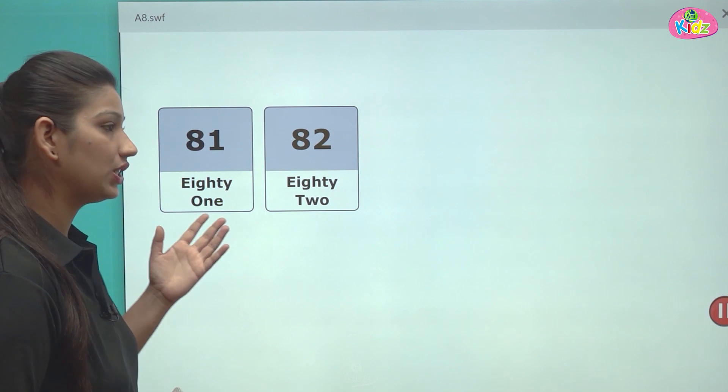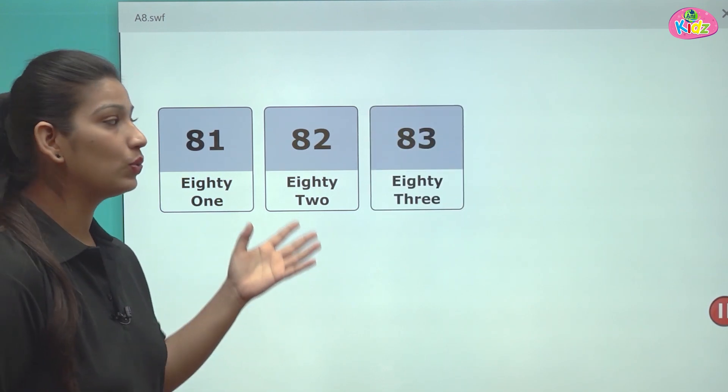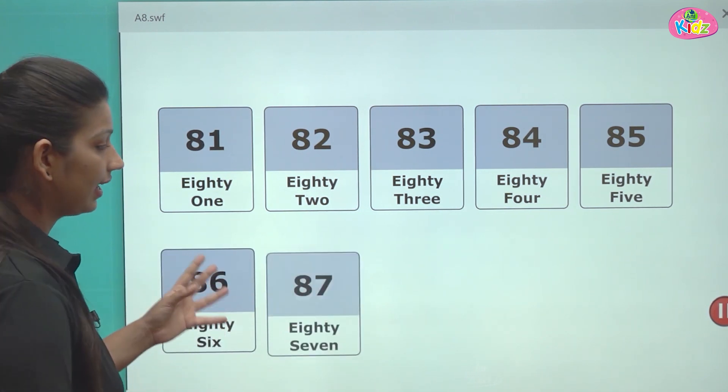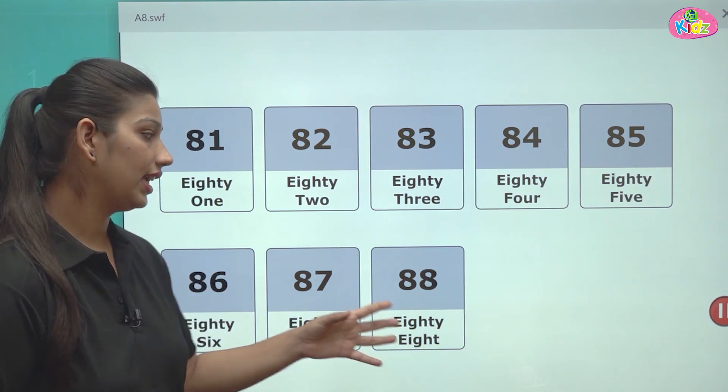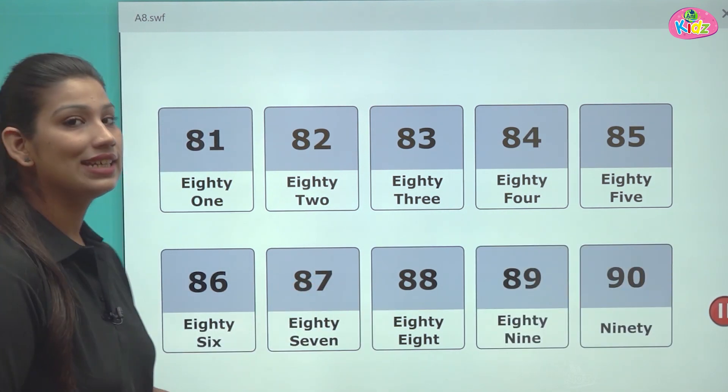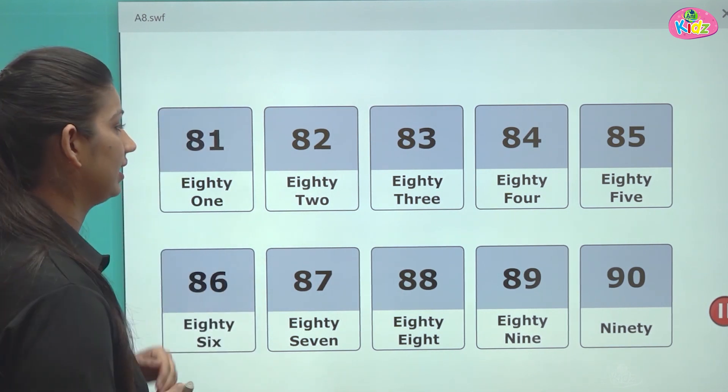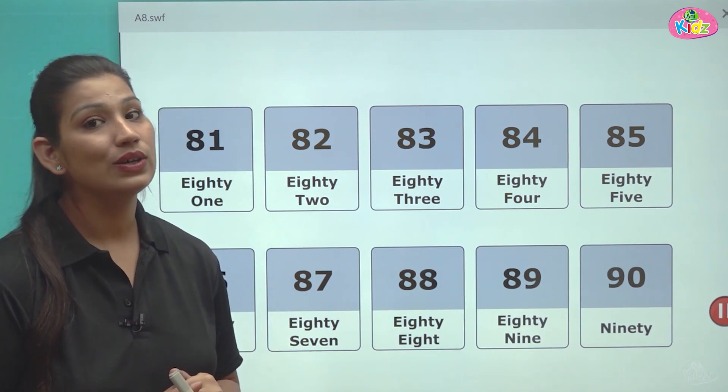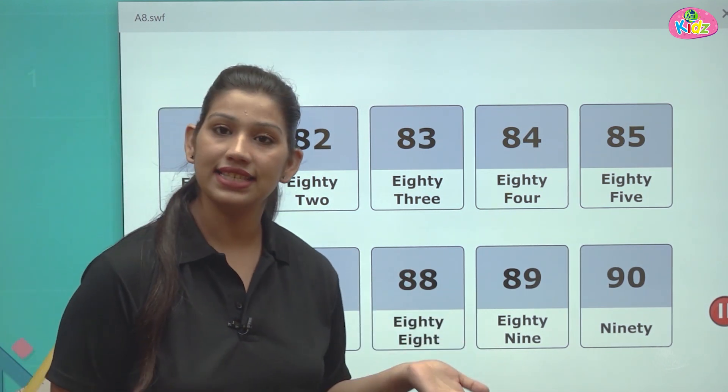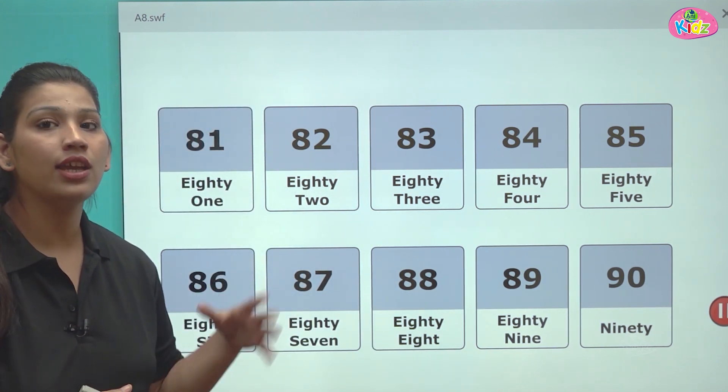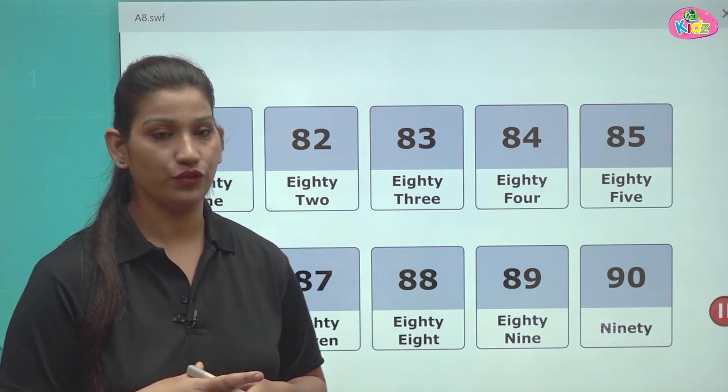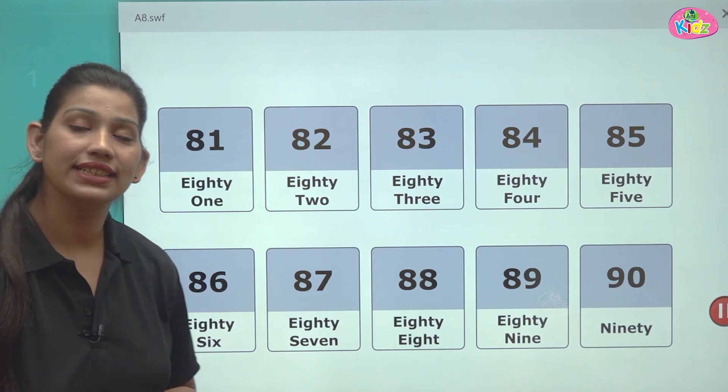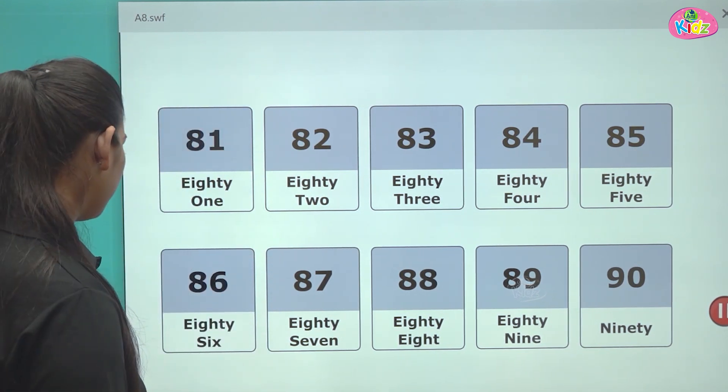After 80 there comes 81, 82, 83, 84, 85, 86, 87, 88, 89 and 90. 81 to 90. Then comes up 90, N-I-N-E-T-Y becomes 90.